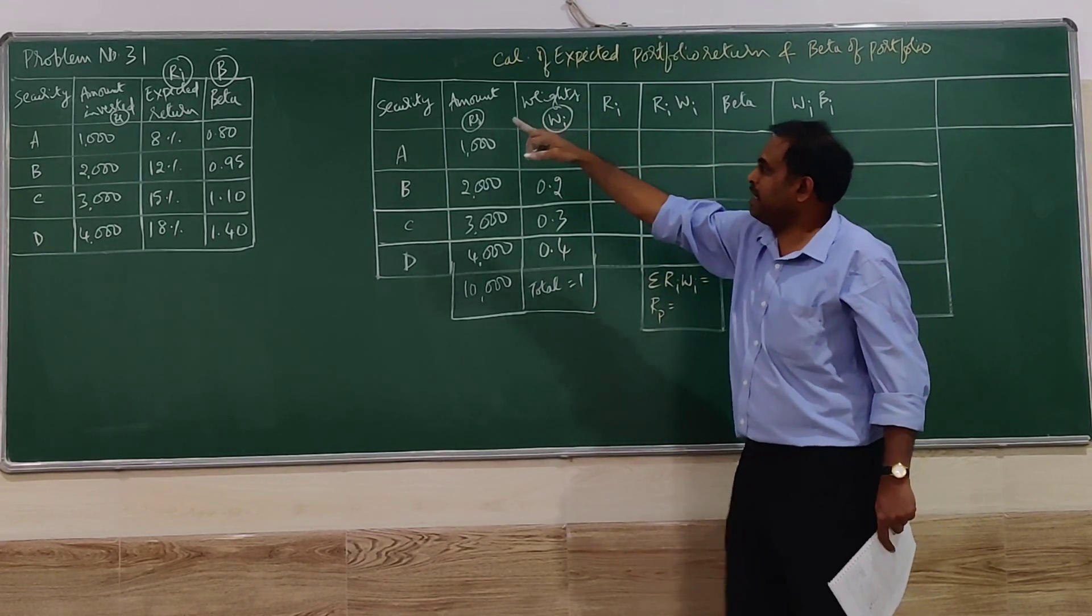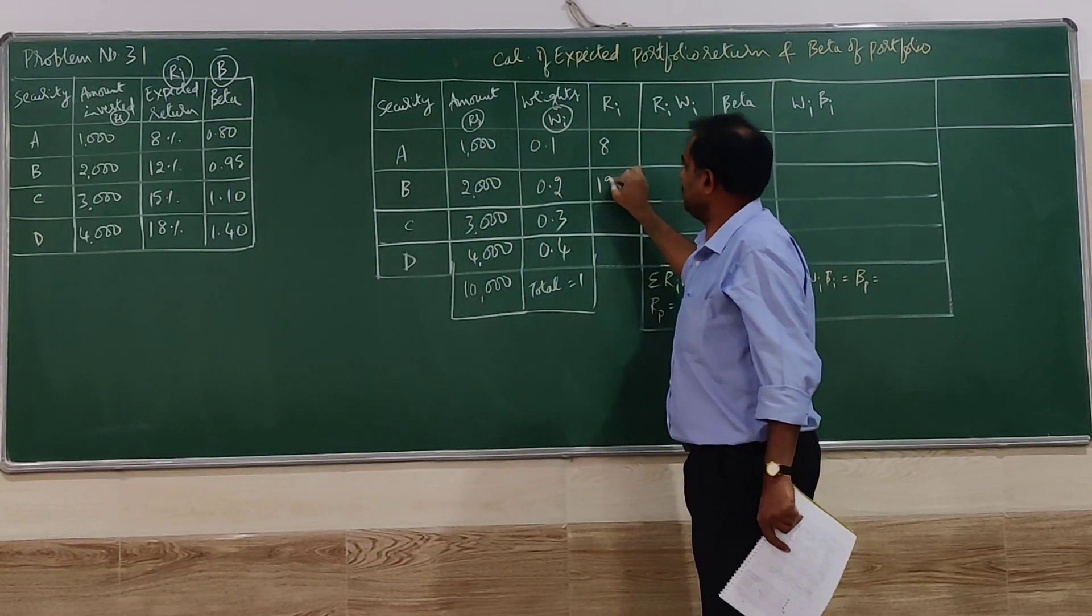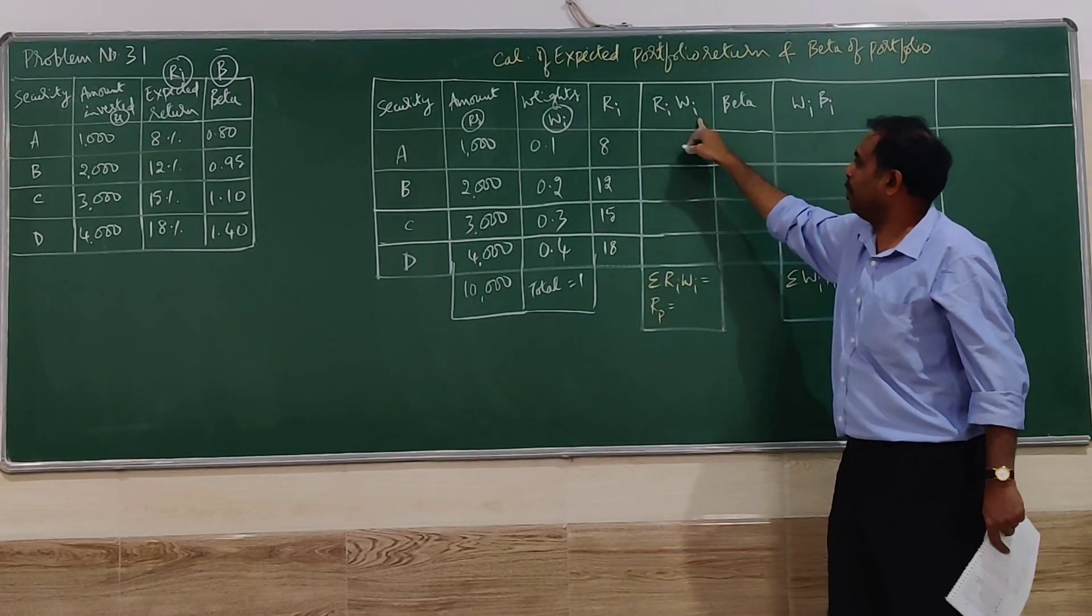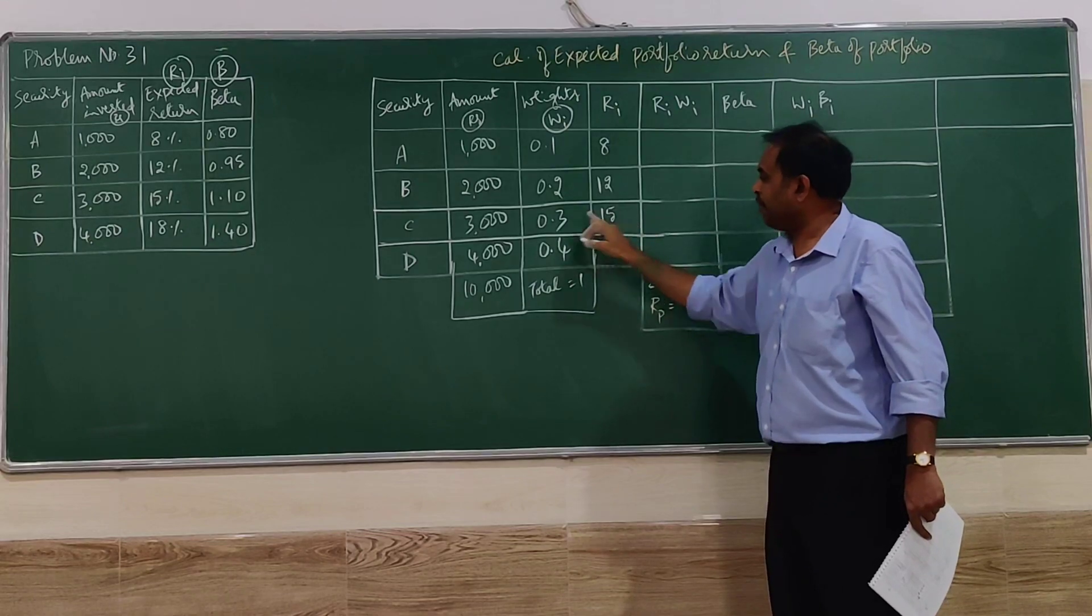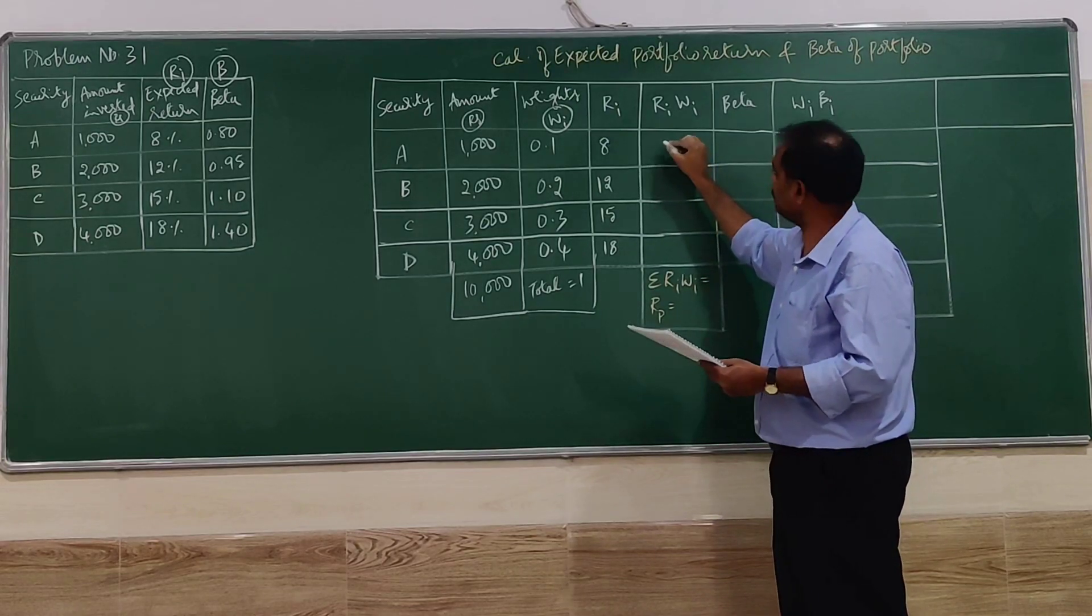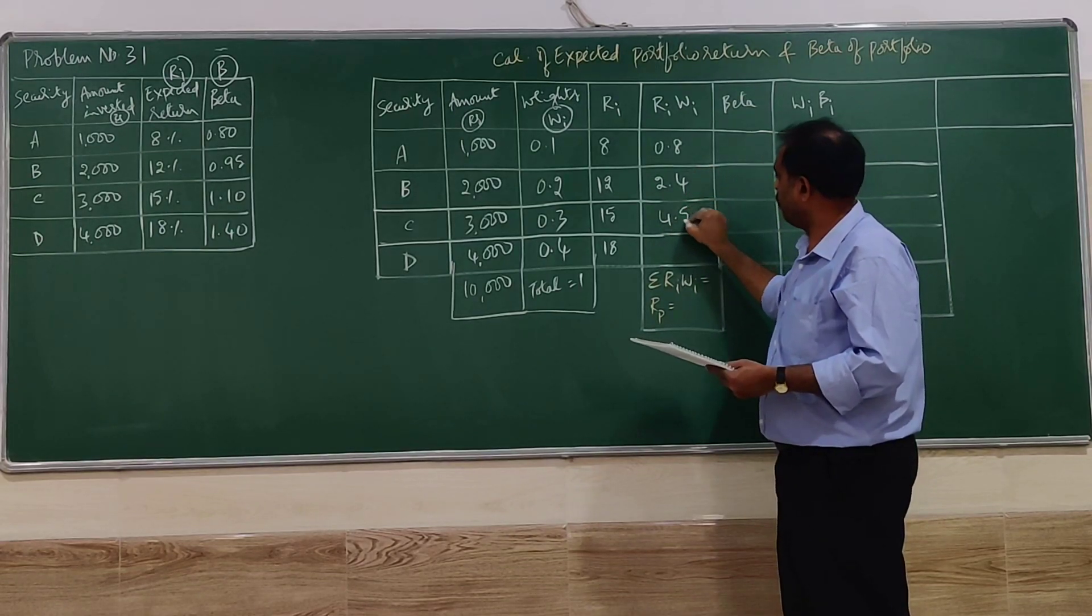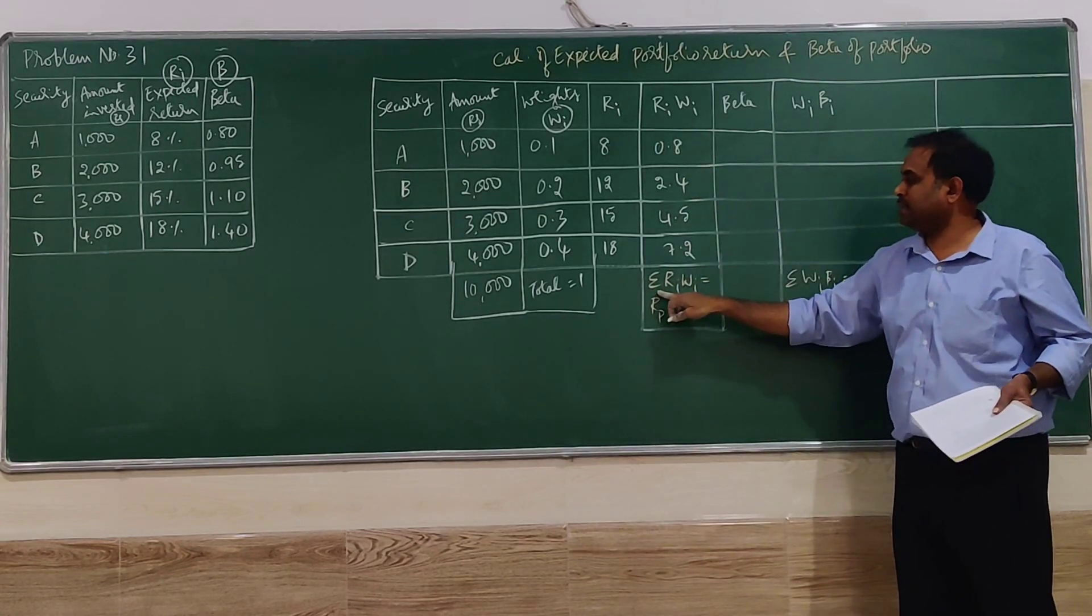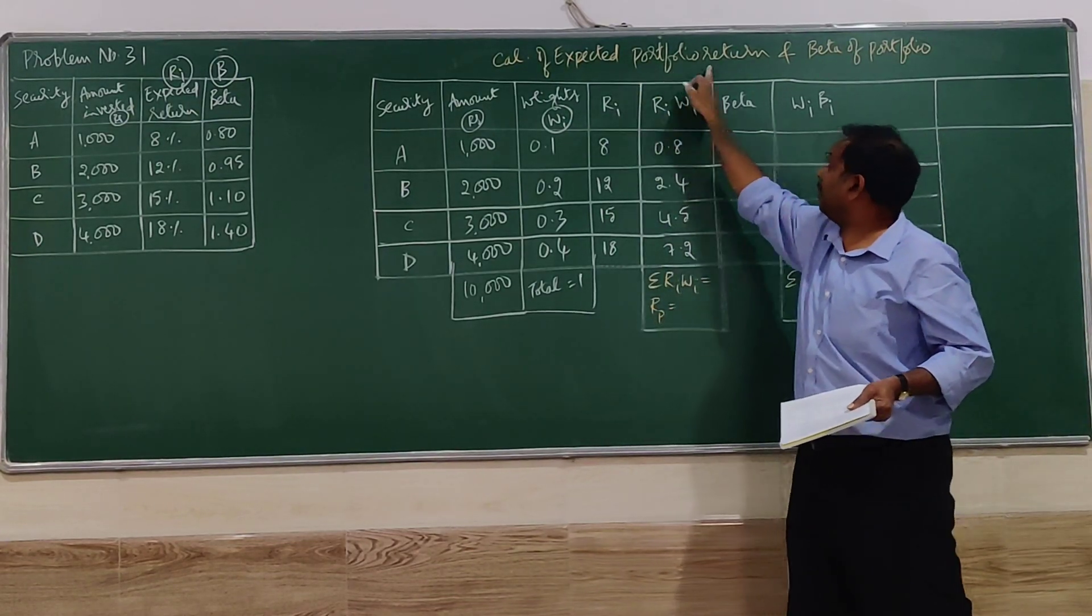Then ri is given in the problem. Expected return of every security: eight percent, twelve percent, fifteen percent, and eighteen percent. So we have to multiply ri and wi. That is 8 into 0.1, 12 into 0.2, 15 into 0.3, 18 into 0.4. When you do that, we get 0.8, 2.4, 4.5, and 7.2.